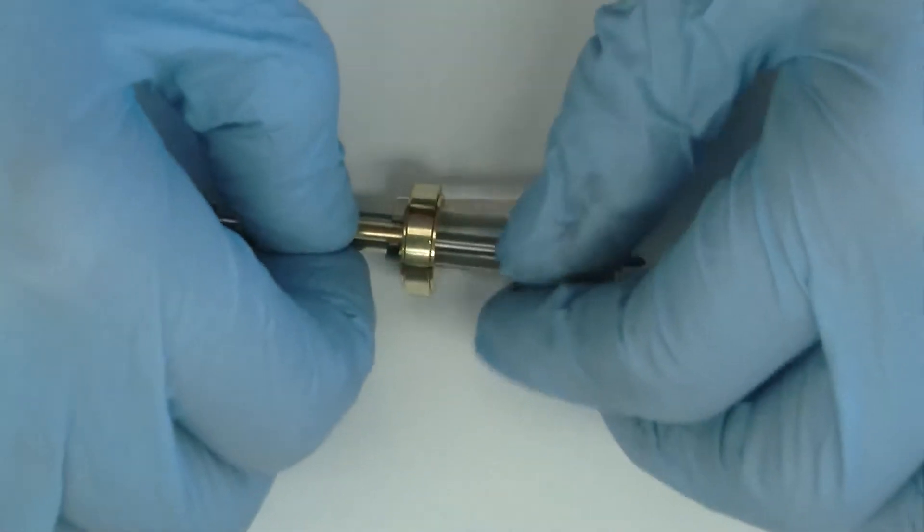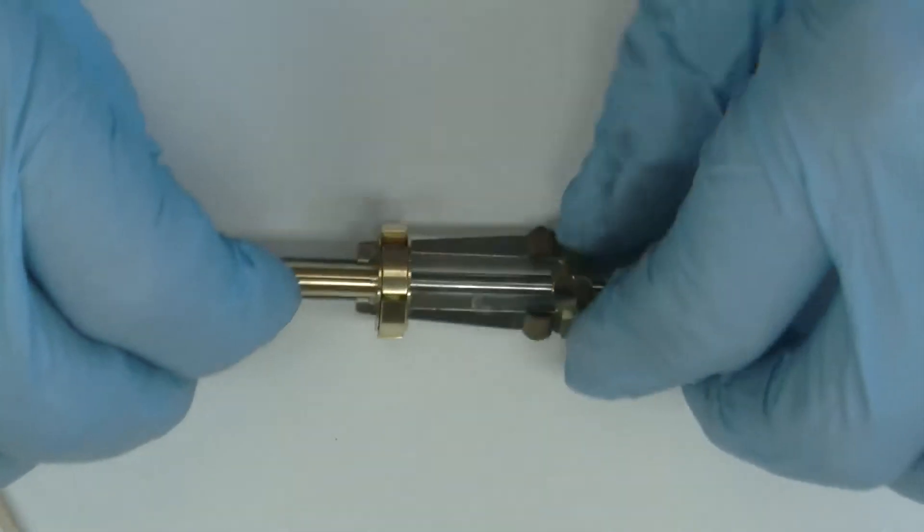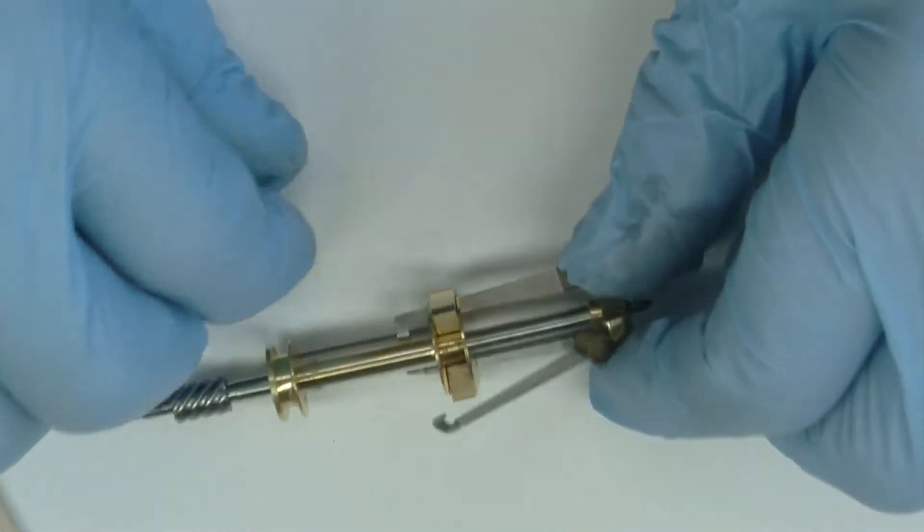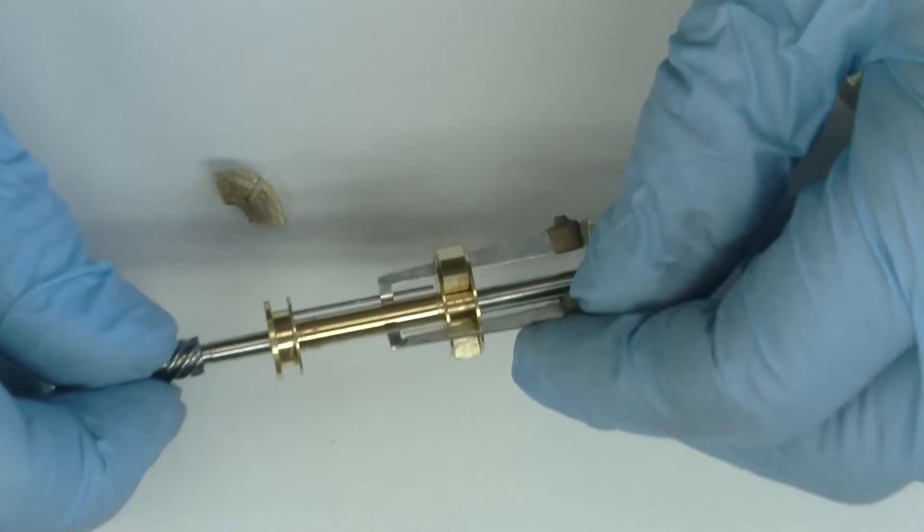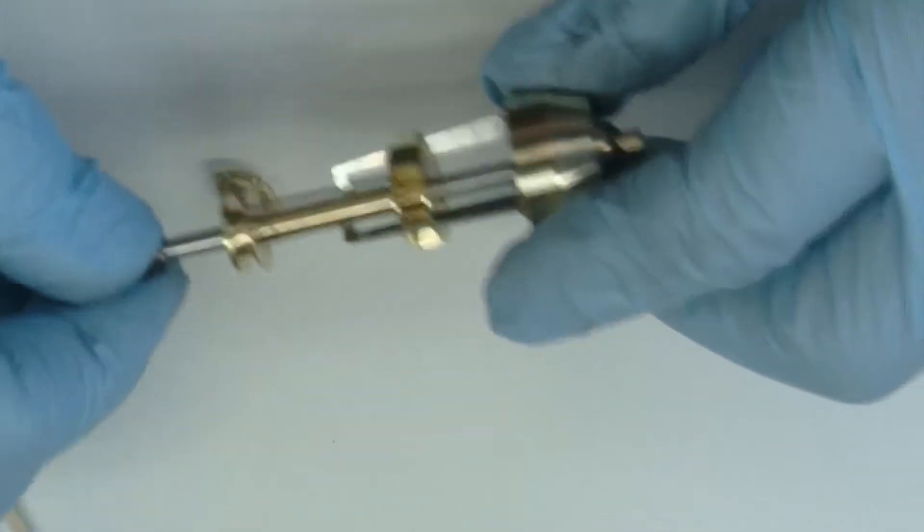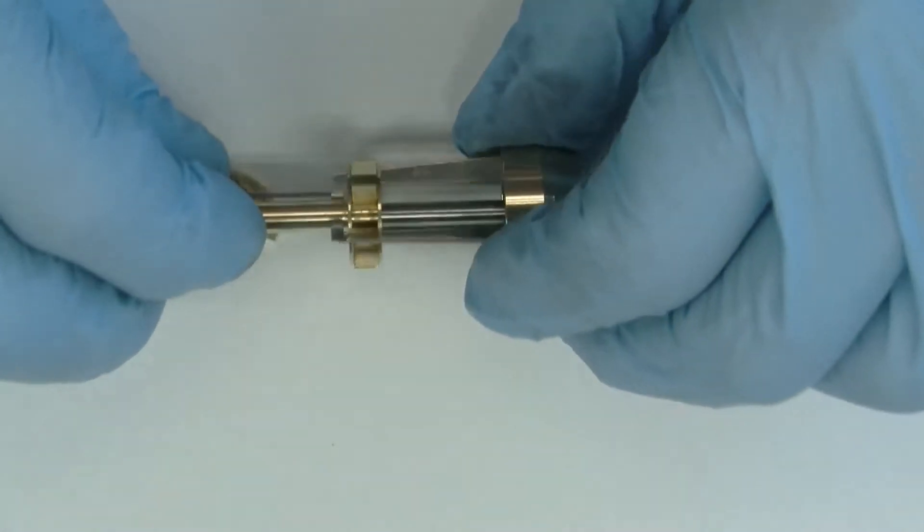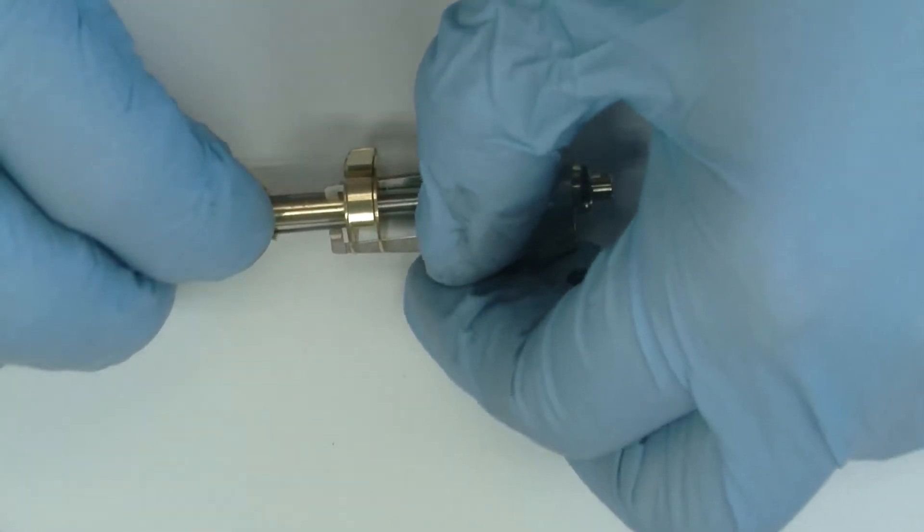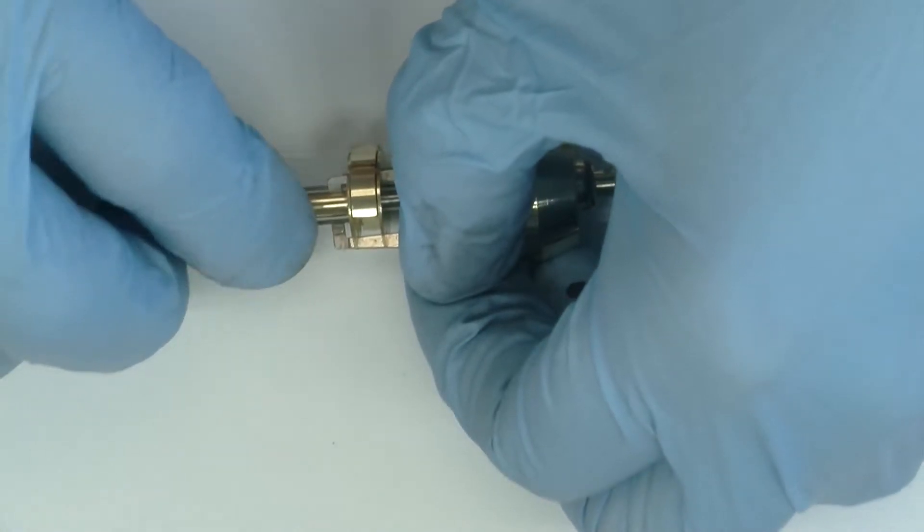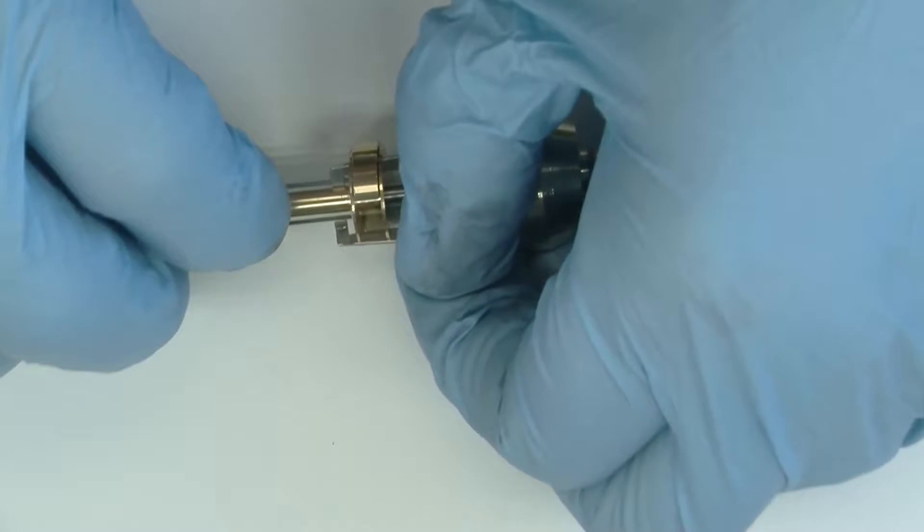So when these pieces are together, this little arm held back by the spring but forced out by the weight is what regulates the speed of the camera.